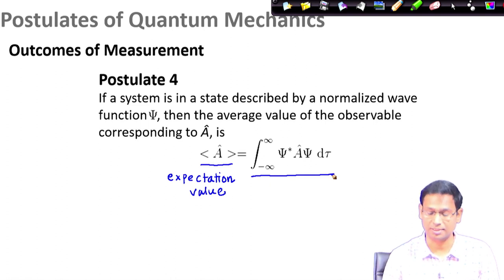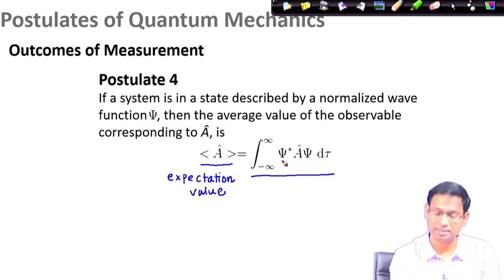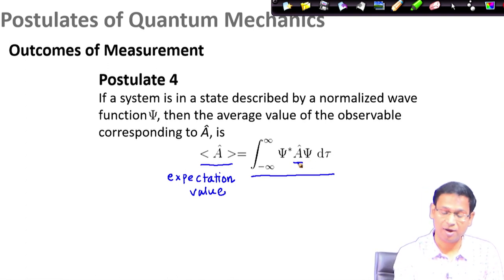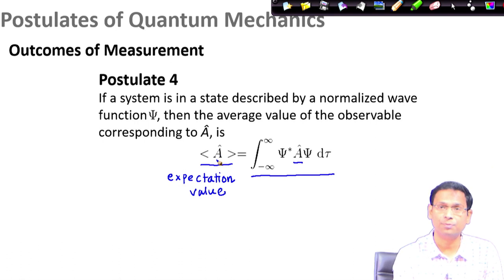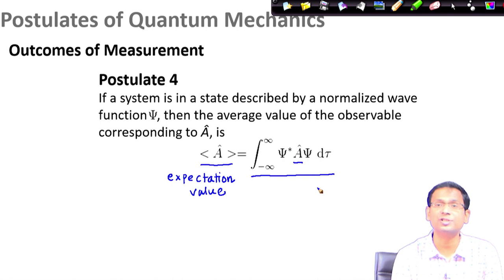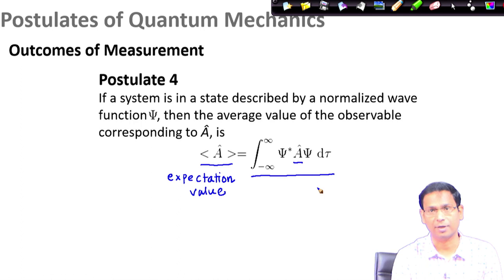The right hand side shows how we can determine this expectation value — this is the relation to remember. It is simply an integral where psi star is the complex conjugate of the state function, psi is the state function, and A is the operator. If I want to determine the average value or expectation value of measurement when I measure observable A, I must evaluate this integral. This expression holds the answer to the question: if the system is not an eigenfunction of operator A, what would be the outcome of the measurement?